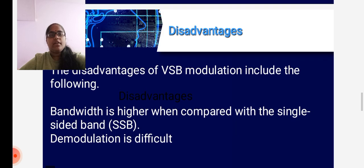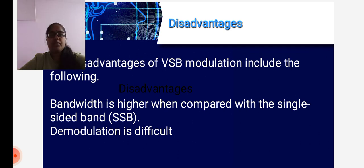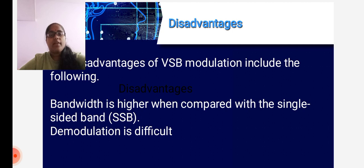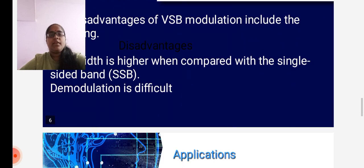Now let us learn the disadvantages of vestigial sideband modulation in television broadcasting. The disadvantages include the following: bandwidth is higher when compared with the single sideband, which is a very important and main disadvantage. Also, the demodulation is very much difficult for vestigial sideband modulation in television broadcasting. So these are the important disadvantages: higher bandwidth compared to single sideband, and difficulty in demodulation.